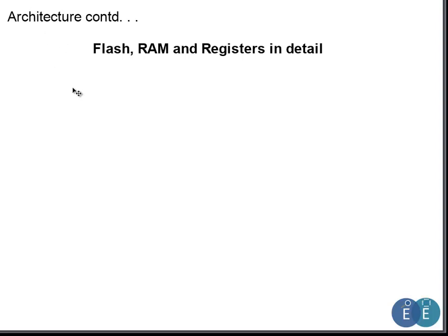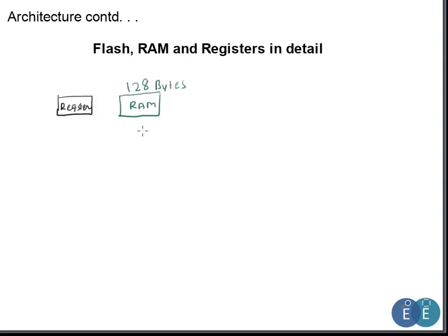Welcome back. Let's go ahead and see the other details of the architecture. In this video we'll see the flash, the RAM, and the internal registers of the microcontroller — these form the memory of the microcontroller. We have registers, which are very close to the CPU and are used for temporary storage. The 8051 microcontroller has 128 bytes of RAM and 4 kilobytes of flash memory to store code permanently.